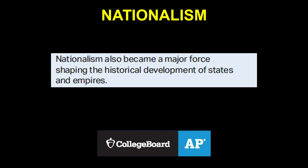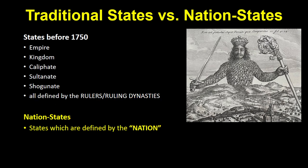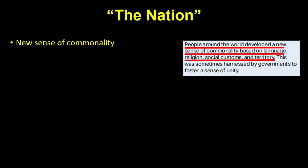To explain nationalism, we first need to understand the concept of a nation. You might connect it to the word country — France or Mexico are examples of nations, more specifically nation-states. Most of the world today is divided into nation-states, but that's not how it was in 1750. States had names like empire, kingdom, caliphate, sultanate, and shogunate — all defined by their rulers or ruling dynasties. A nation-state is a state that is defined by the nation.